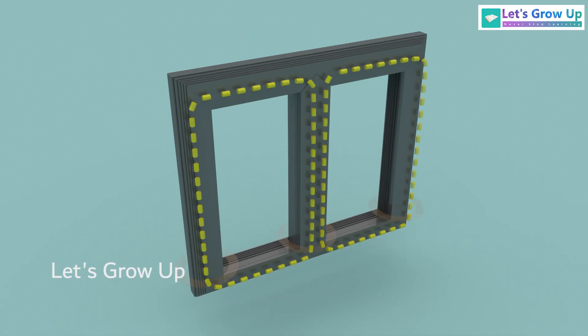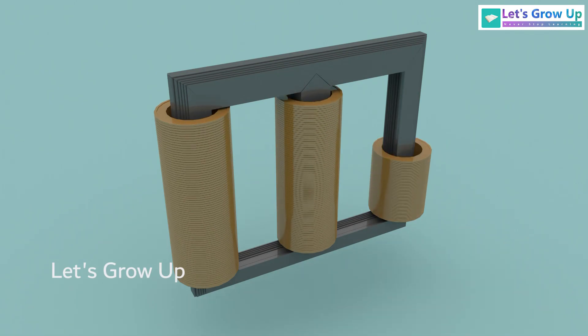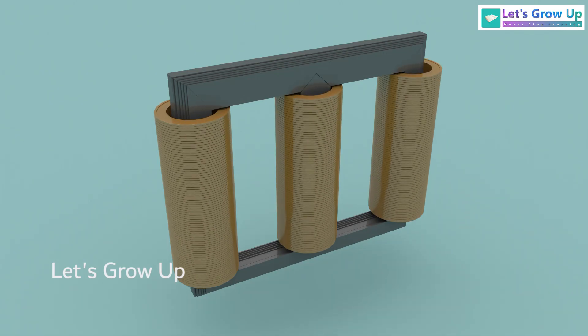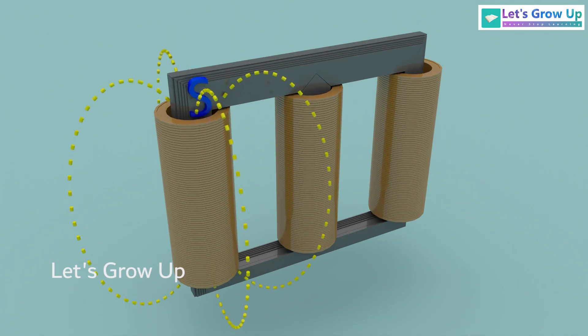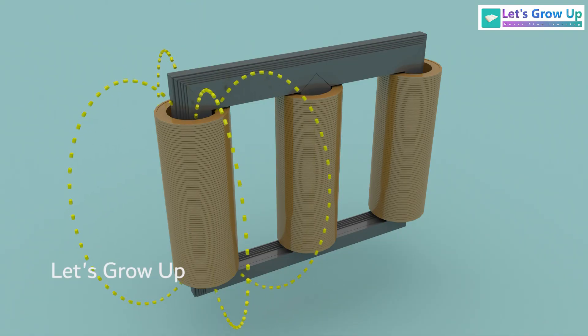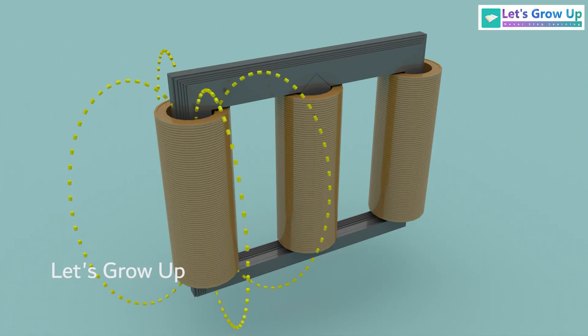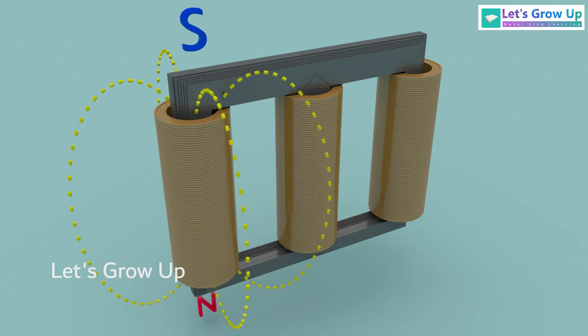The primary winding, a coil of wire connected to the input voltage source, produces a changing magnetic field in response to alternating current, AC.